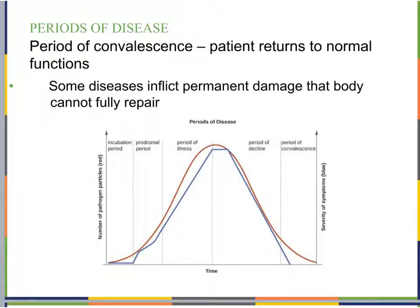The period of convalescence is when the patient returns to normal function — feeling completely normal again. However, some diseases can inflict permanent damage that the body cannot fully repair. Even after pathogen particles are gone, there may be permanent damage remaining from the infection itself.